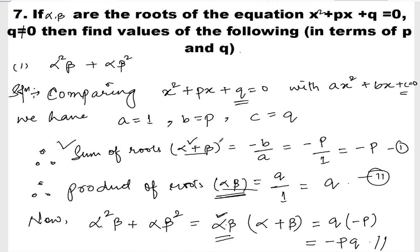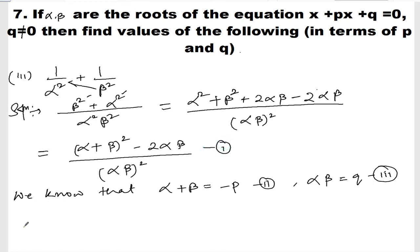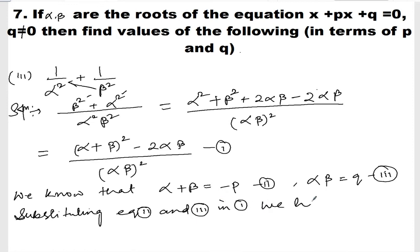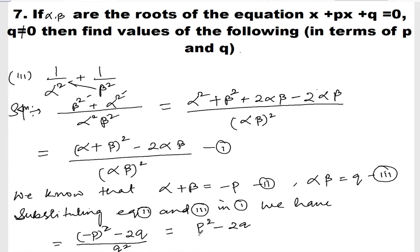Substituting: α² + β² = (-p)² - 2q = p² - 2q, and (αβ)² = q². So the answer is (p² - 2q) / q². That is the solution for roman number 3.